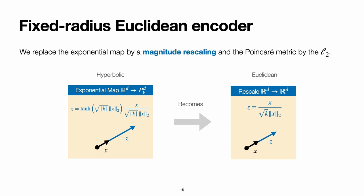And then we discard the hyperbolic metric and replace it by the Euclidean distance. And this is what we call the fixed-radius Euclidean encoder.